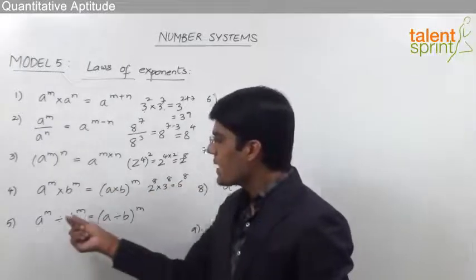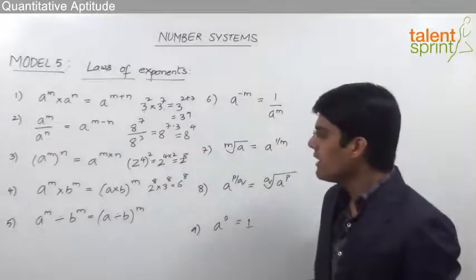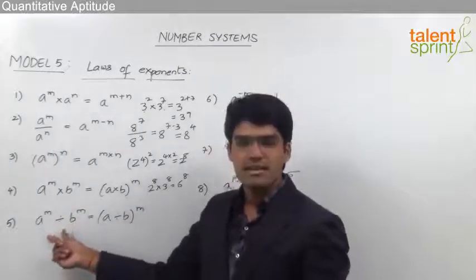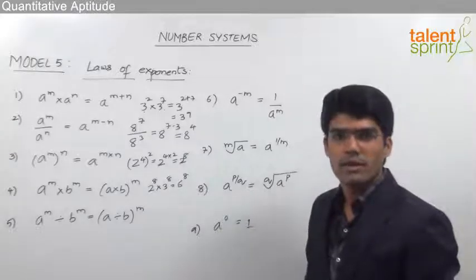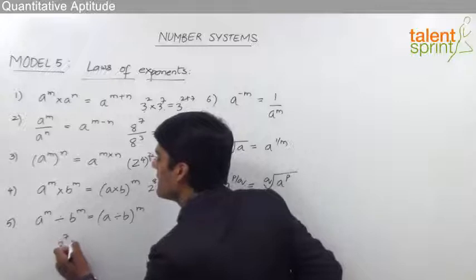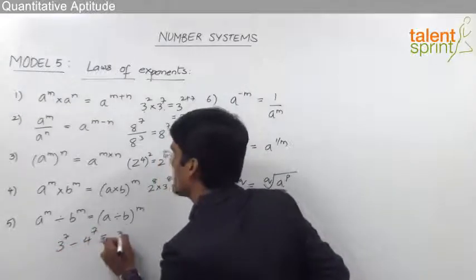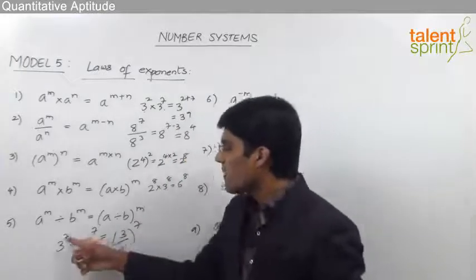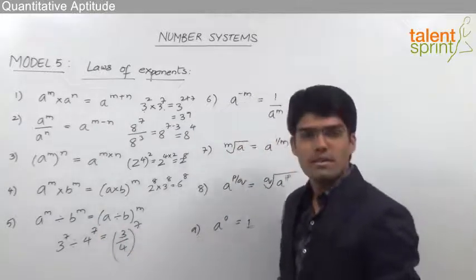The next rule is: a power m divided by b power m will be equal to a divided by b, whole to the power of m. Whenever the powers are equal and the bases are in division form, they can be divided and taken whole to the power of the given value. For example, 3 power 7 divided by 4 power 7 can be taken as 3 by 4, whole to the power of 7.